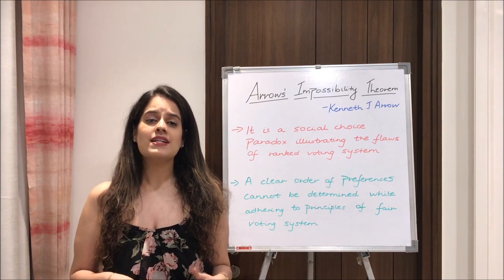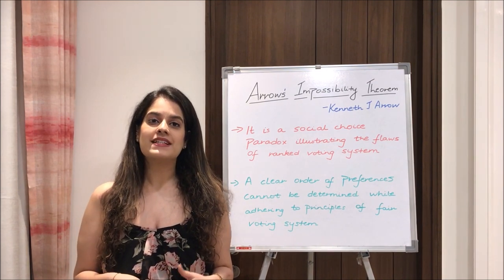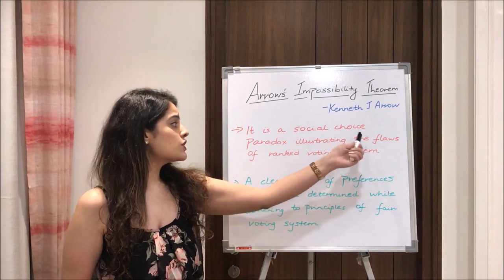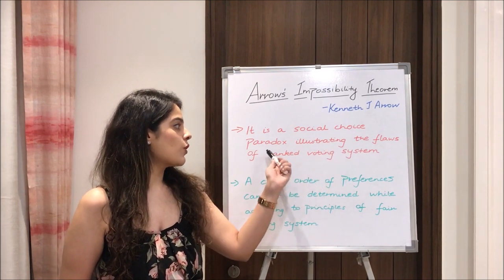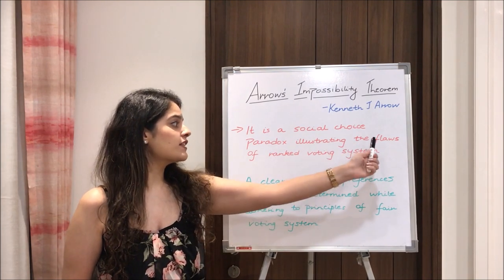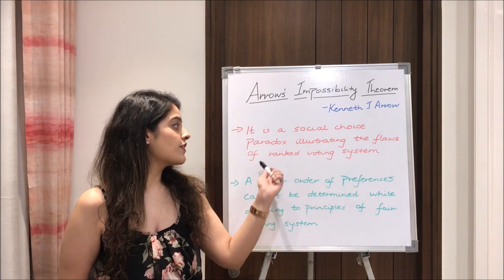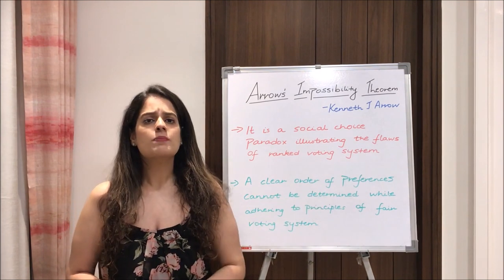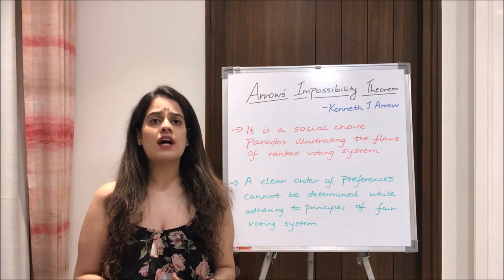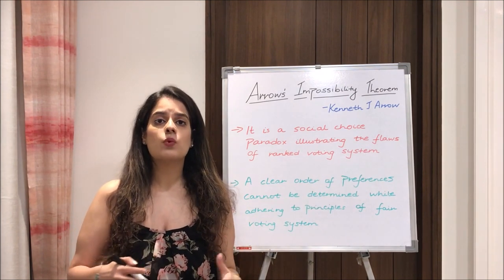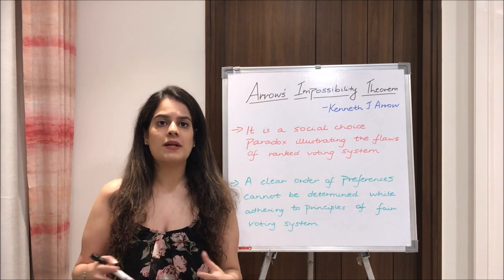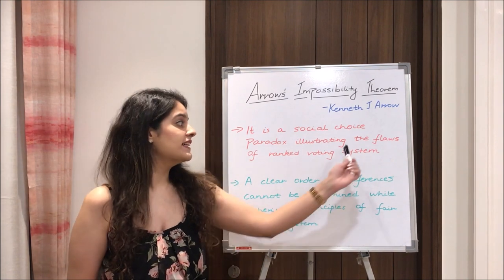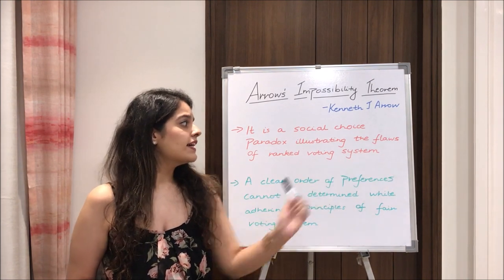So what does Arrow's impossibility theorem basically state? It is a social choice paradox illustrating the flaws of ranked voting systems. It basically shows how our ranked voting system — which might be any election voting system — is completely flawed.